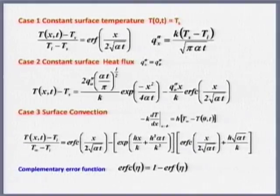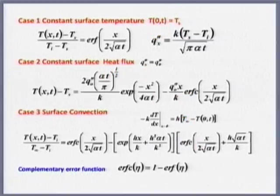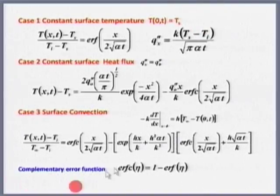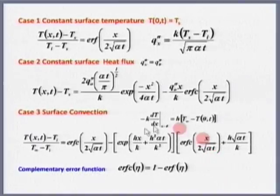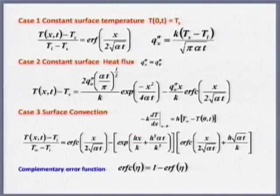There are similar equations derived for constant wall heat flux and convective boundary conditions. For the convective case you see a complementary error function erfc(η) = 1 − erf(η), so you can look up the same error function table. It is a little messy in terms of arguments, but it is a doable exercise.